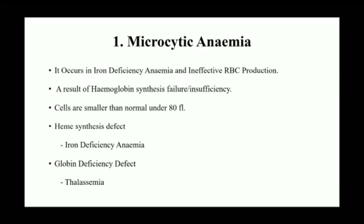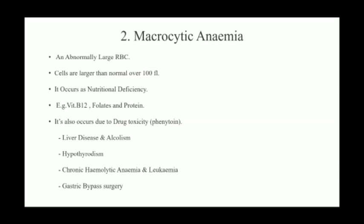Microcytic anemia: iron deficiency ke karan ineffective RBC production hota hai. Isme hemoglobin synthesis failure ho jati hai. Cells are smaller than normal — under 80 fL. Jo heme synthesis hota hai wo defective hota hai — iron deficiency anemia ke andar yahi hota hai.